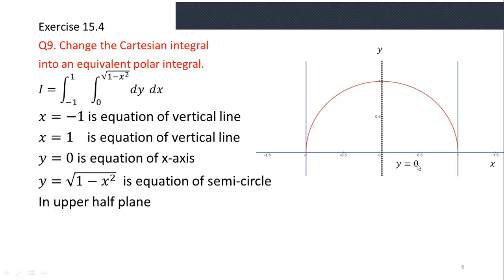y = 0 is the x-axis, x = 1 is the vertical line through x = 1, and x = −1 is the vertical line through x = −1. y = √(1 − x²) is the equation of a semicircle in the upper half-plane with radius 1. Since the center coincides with the origin, the distance from the origin to the boundary of the circle is always equal to the radius, which is 1. Our region of integration is this whole semicircle.